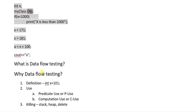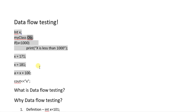We use data flow testing because it is very important — by using it we figure out and identify many logical bugs that can go hidden if we do not follow its steps. Like in this small program, there is a logical mistake that will be easily identified by data flow testing. You as a programmer can identify that mistake.